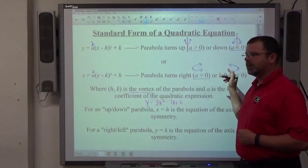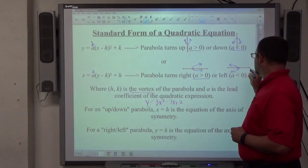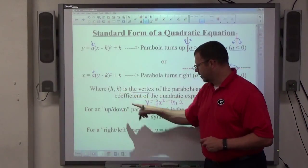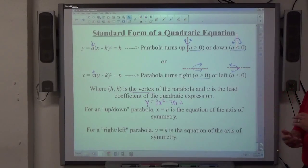If it's a left-right parabola, the axis of symmetry is horizontal. So it's going to be a y equals equation, y equals the y-coordinate of the vertex. So that's what that note sheet's for, it's going to guide you through some stuff here.